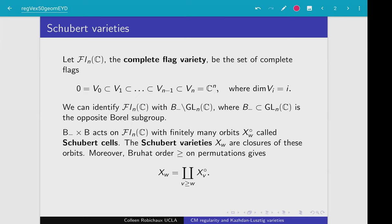As many of you know, we can identify the complete flag variety with a quotient of GL_N — those complex-valued n by n invertible matrices — where the opposite Borel subgroup we're quotienting by are those lower triangular matrices in GL_N. By taking certain orbits of these Borel subgroups, we can get our Schubert cells, where the ordinary B is the Borel subgroup of upper triangular matrices. By taking Zariski closures of our Schubert cells, we get our Schubert varieties.